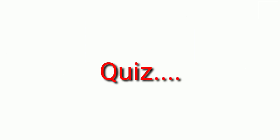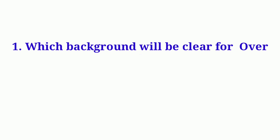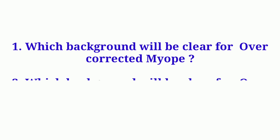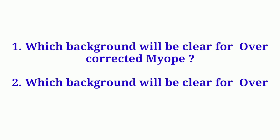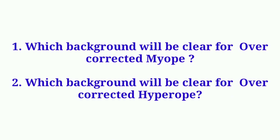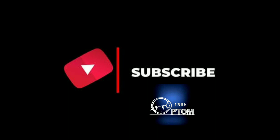Here's a question for you: in the Duochrome test, for an overcorrected myope, which color background letters will be clearer? And for an overcorrected hyperope, which color background letters will be clearer? Drop your answers in the comment section. See you tomorrow — don't forget to subscribe for daily updates.